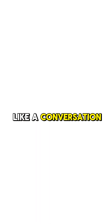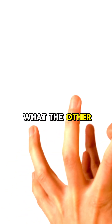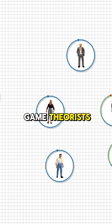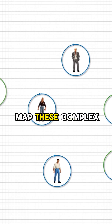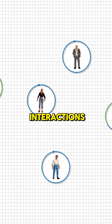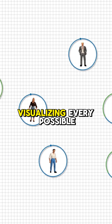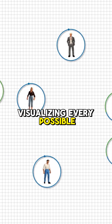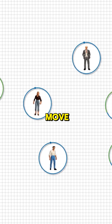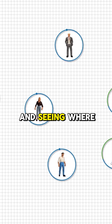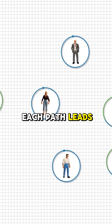Think of it like a conversation. Each choice you make directly shapes what the other person can do next. Game theorists map these complex interactions using decision trees, visualizing every possible move branch by branch and seeing where each path leads.